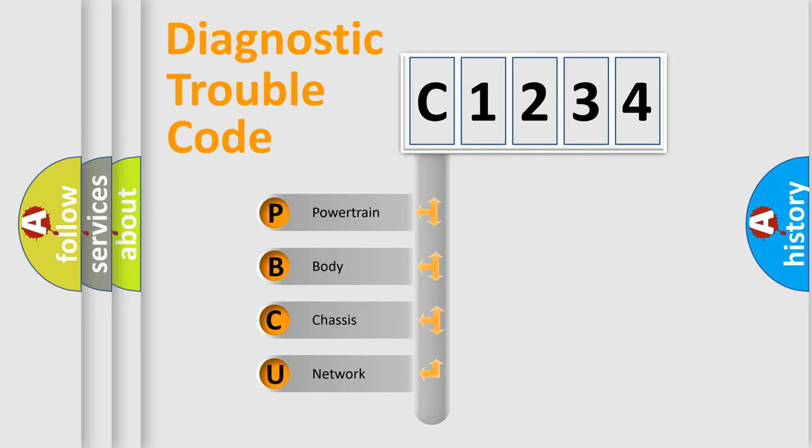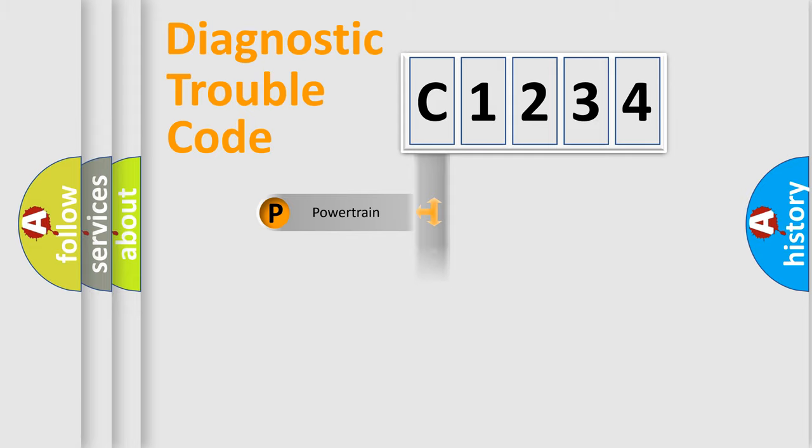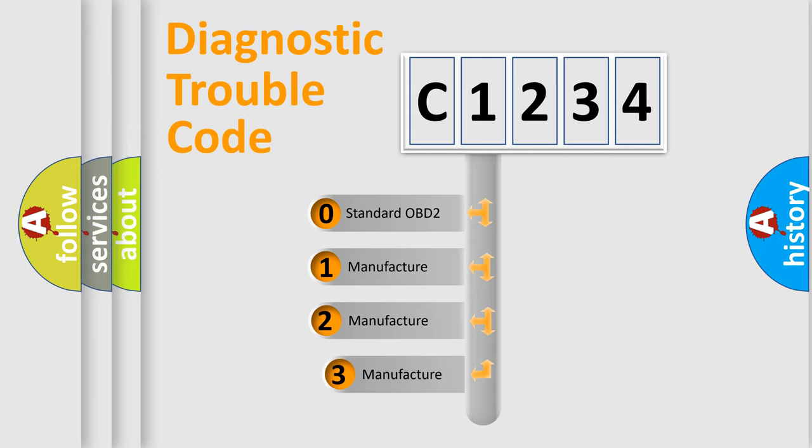We divide the electric system of automobile into four basic units: Powertrain, Body, Chassis, Network. This distribution is defined in the first character code.